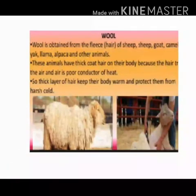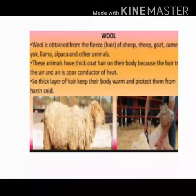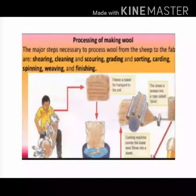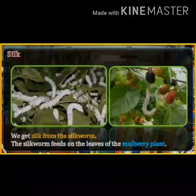Next, wool. It is obtained from the fleece of sheep, and wool is also obtained from camels. These animals have a layer of thick hair around their body. The major steps in processing wool are: shearing, cleaning and scouring, grading and sorting, curling, spinning, weaving, and finishing.